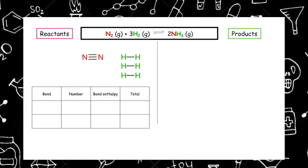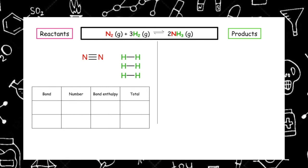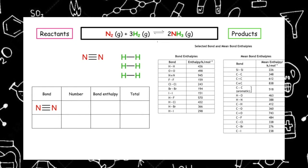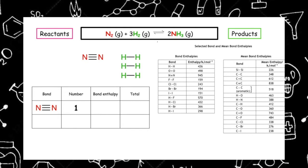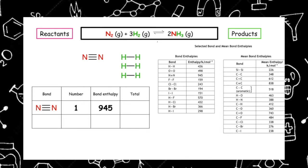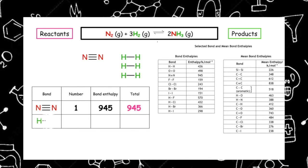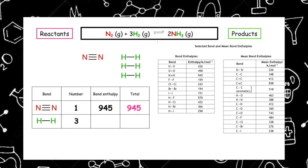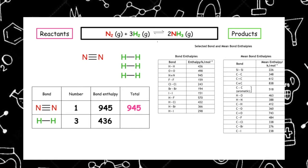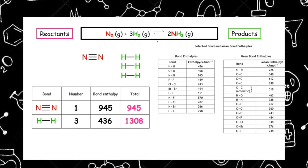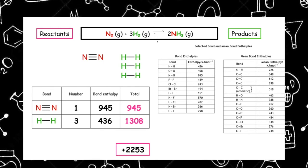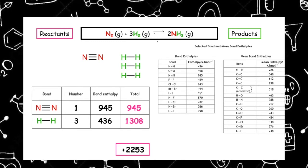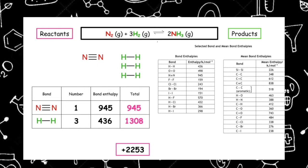We insert our information into the table. For the N≡N triple bond we have 1; looking up page 10 the bond enthalpy is 945, so 1 × 945 = 945. For the H–H bond we have 3; the bond enthalpy from page 10 is 436, so 3 × 436 = 1308. Adding both gives a total of 2253. Remember we need to put energy in to break bonds, so this is a positive value because it is an endothermic process.